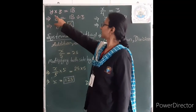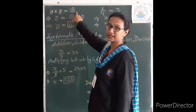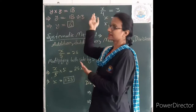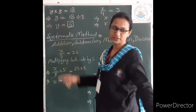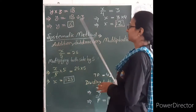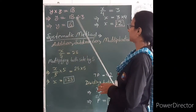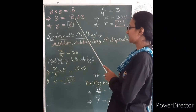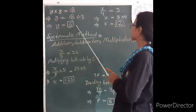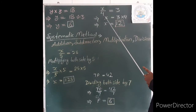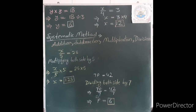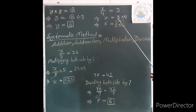Here is another example: y multiplied by 3 is equal to 18. If we move the 3 to the right-hand side, it becomes division: y is equal to 18 divided by 3, which means y is equal to 6. Another example using division: x divided by 4 is equal to 3. When we move 4 to the right-hand side, the division sign changes to multiplication: x is equal to 3 multiplied by 4, so x is equal to 12.